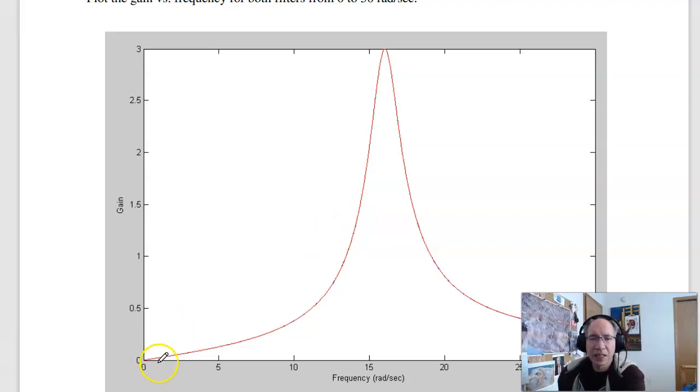In this case, I can't match the gain of DC because the DC gain is zero. So we get zero equals zero. Solve for k. In this case, instead I said, pick k to make the maximum gain the same.